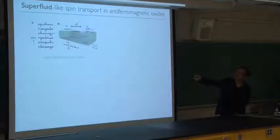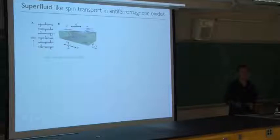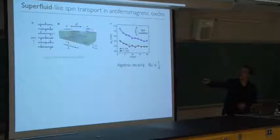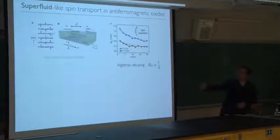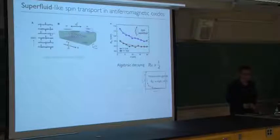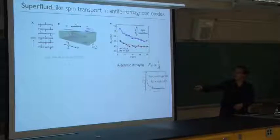They measured the voltage development across the spin current detector by changing the distance between the two platinum electrodes — the same experimental setup as the previous one, except using chromia, which is an antiferromagnetic oxide. Here is the result: horizontal axis is the distance between two platinum; vertical axis represents the spin current magnitude. Surprisingly, the spin current does not decay exponentially. It rather decays algebraically as one over distance. We don't see exponential decay here, which is in stark contrast with the strong suppression of spin current in yttrium iron garnet. Why does chromia have algebraically decaying spin current whereas yttrium iron garnet has exponentially decaying spin current?